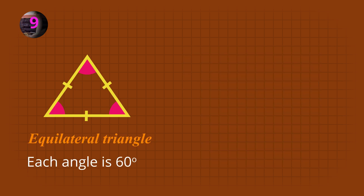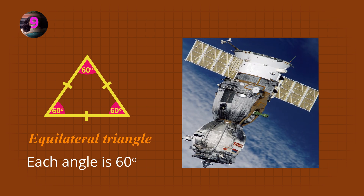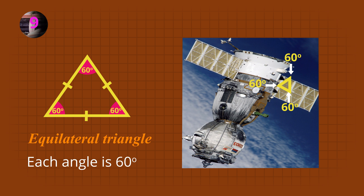In this equilateral triangle, all three sides are the same length, and all three angles are the same size. Remember that the three angles of a triangle add to 180 degrees. So in this equilateral triangle on the satellite, each angle is 60 degrees.